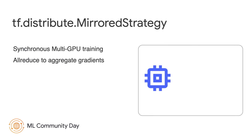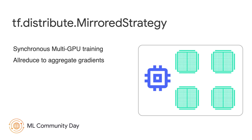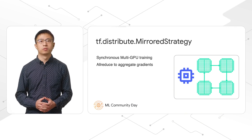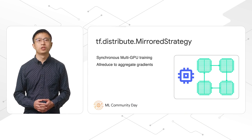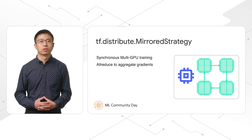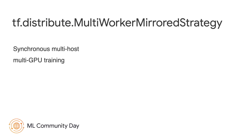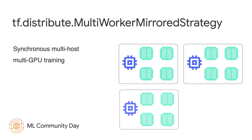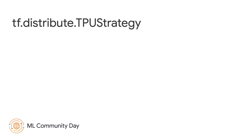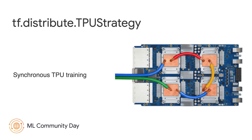We released the library in 2018 with Mirror Strategy, which provides multi-GPU synchronous training. It does data parallel training as it replicates model variables and computations on all the GPUs. All GPUs run in lockstep and use all-reduce to aggregate gradients. Multi-worker Mirrored Strategy is similar to Mirrored Strategy, but it supports synchronous training on GPUs across multiple hosts. We have also developed TPU Strategy, which supports synchronous training on TPU chips.